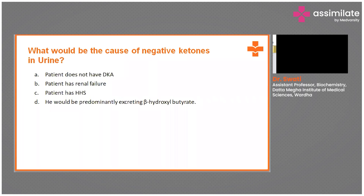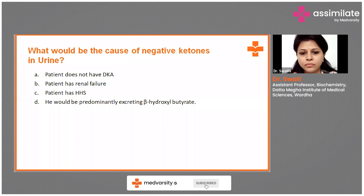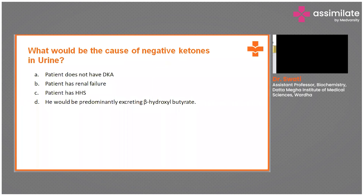There are three types of ketones: acetone, acetoacetate, and beta-hydroxybutyrate, out of which the third ketone — beta-hydroxybutyrate — won't get detected in urine. That's why option D has been chosen.